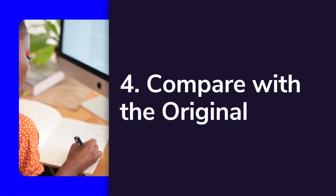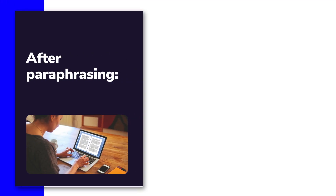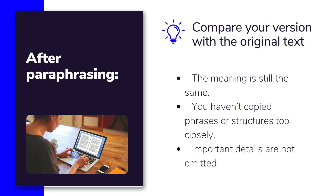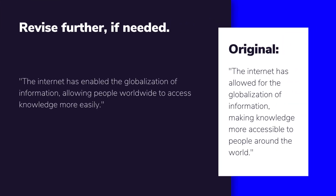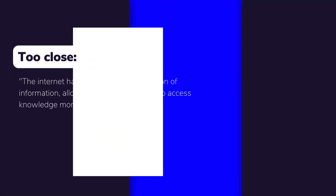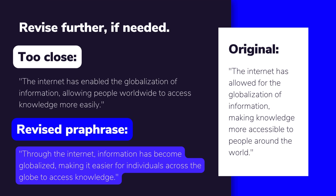The next step is to compare your paraphrase with the original text. Once you've rephrased, it's important to check that your version still carries the same meaning, that you haven't copied phrases or structures too closely, and that you haven't left out any important details. For example, if the original says 'The Internet has allowed for the globalization of information, making knowledge more accessible to people around the world,' and your paraphrase is 'The Internet has enabled the globalization of information, allowing people worldwide to access knowledge more easily,' that's still too close to the original. Instead, try: 'Through the Internet, information has become globalized, making it easier for individuals across the globe to access knowledge.' This version keeps the meaning but feels fresh and original. If your paraphrase is too similar, don't hesitate to revise it further.